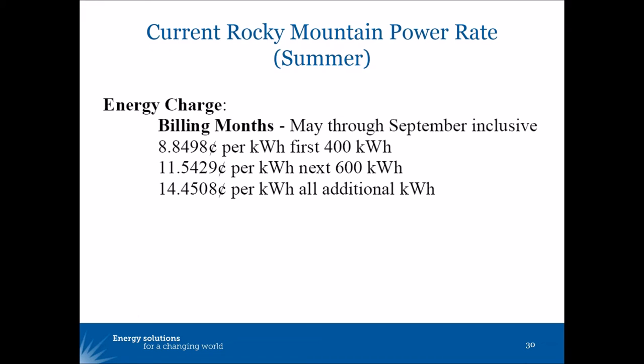A time of use rate is not at all incompatible with an inclining block rate. In fact, Jim showed that combining the two is one of the best ways to reduce demand and energy use simultaneously. Here we show an example of an inclining block rate from Rocky Mountain Power, where the customer pays a low energy charge for the first 400 kilowatt hours of usage during summer months.